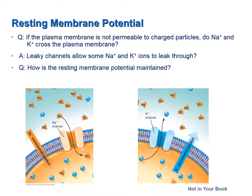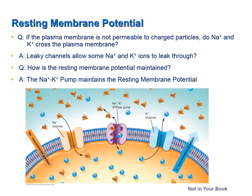The obvious follow-up question is: if sodium and potassium ions constantly leak through the plasma membrane, how is the resting membrane potential maintained? If leakage occurs indefinitely, eventually there will be no sodium and potassium gradients. The answer is the sodium-potassium pumps. These pumps maintain the resting membrane potential by returning leaked potassium to the intracellular fluid and leaked sodium to the extracellular fluid, maintaining the resting membrane potential.